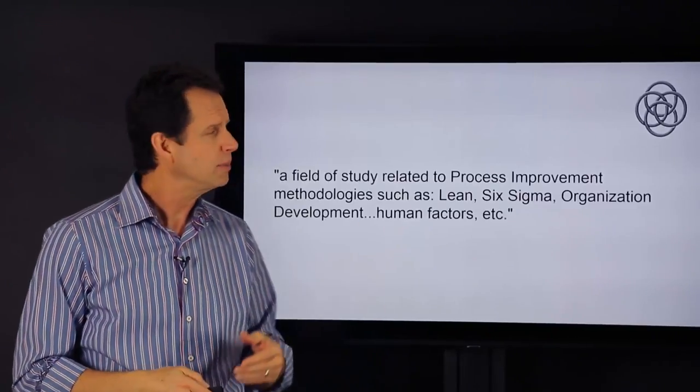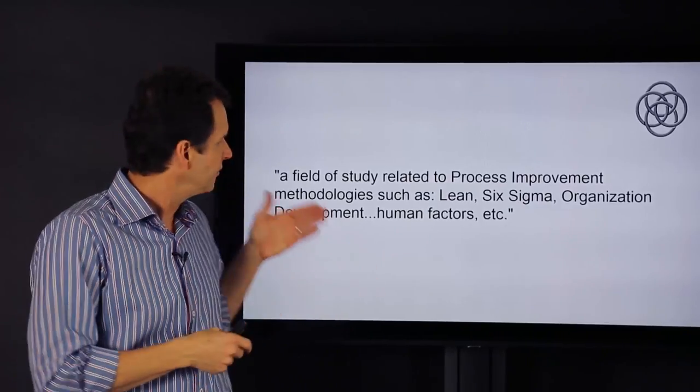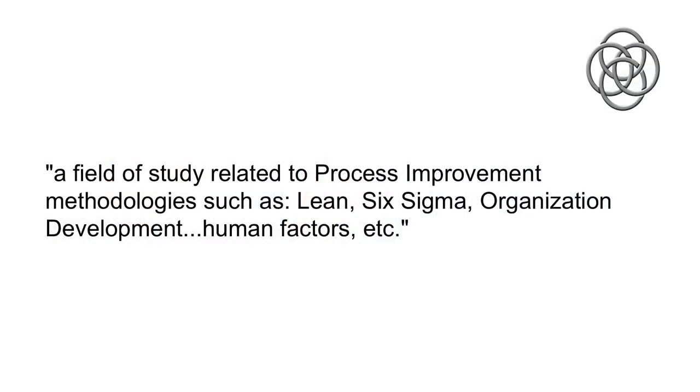For example, if we go to Wikipedia, we find the definition for human performance is a field of study related to process improvement methodologies such as Lean, Six Sigma, organizational development, human factors, etc.